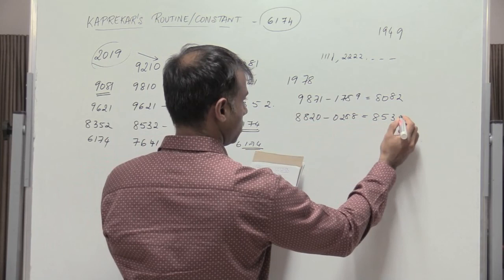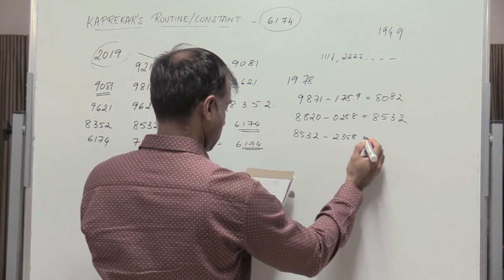Again 8532 minus 2358 gives me 6174. And this number remains a constant.